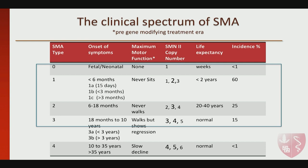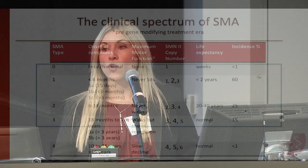There is a very rare fetal form where symptoms start occurring in utero, and at the time of birth the baby is already quite symptomatic — admitted to the NICU, sometimes presenting almost like a fetal akinesia syndrome with severe contractures, inability to breathe independently, and feeding difficulties. Life expectancy is weeks if you don't intervene. The incidence of these cases is very low, and these patients tend to have only one copy of SMN2.